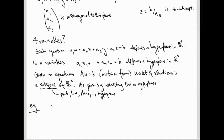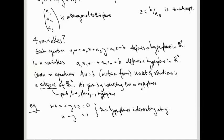Consider the equations w plus x plus y plus z equals 0 and x minus y equals 1. It's four variables so we're working inside four-dimensional space. Each equation gives us a hyperplane and the two hyperplanes intersect along a two-dimensional plane. So, these give us two hyperplanes intersecting along a two-dimensional subspace.